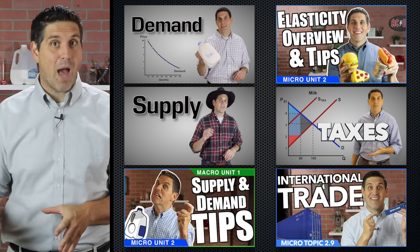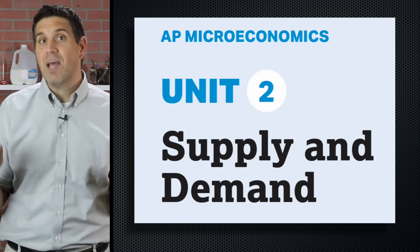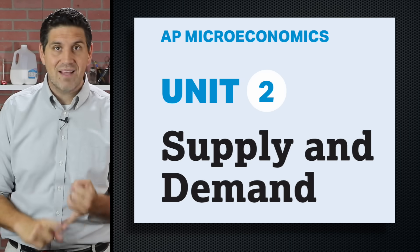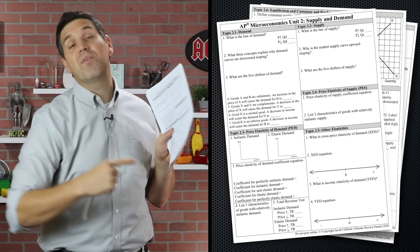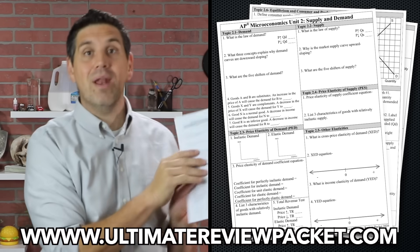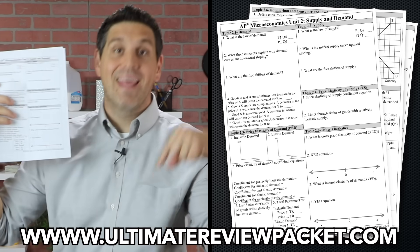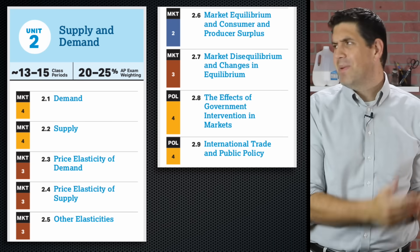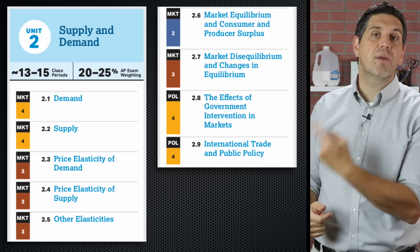Hey econ students, this is Jacob Clifford. Welcome to the microeconomics unit 2 summary video. I've made a bunch of individual topic videos to help with all the concepts in this unit, but this summary video is designed to get all the concepts back in your brain and get you ready for your unit test, your final, or the AP exam. I'm using the AP economics curriculum, but if you're in a college class, it's all the same stuff — this is all introductory microeconomics.